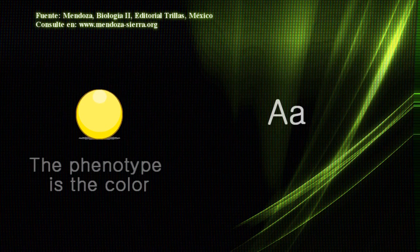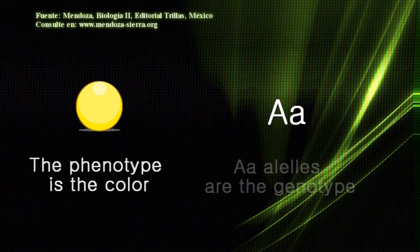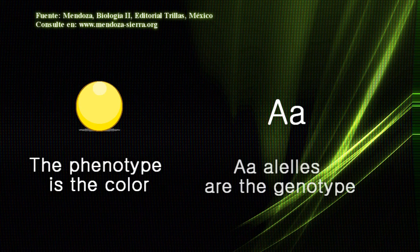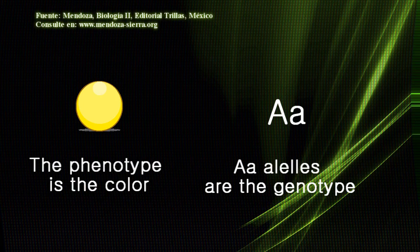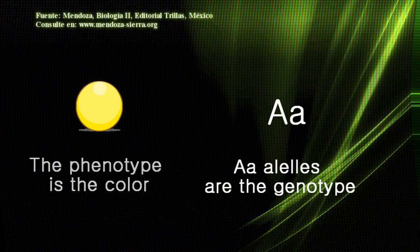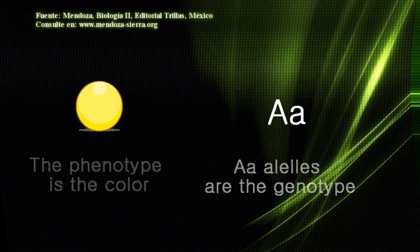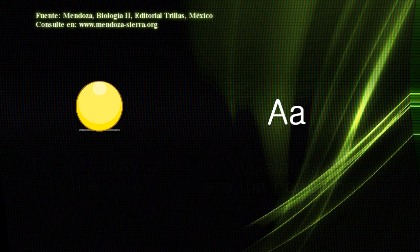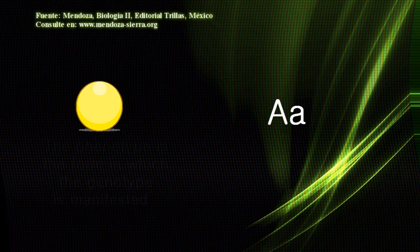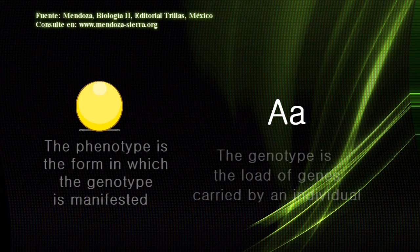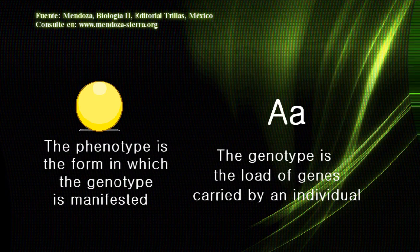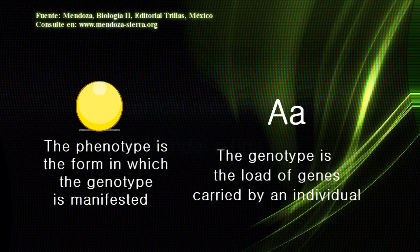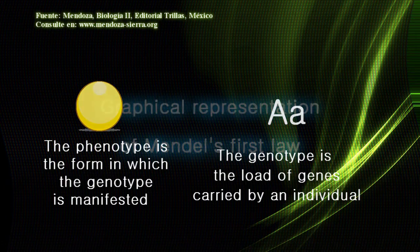The phenotype is an observable characteristic — in this case, the color of the pea seed. Meanwhile, the genotype refers to the type of genes of the individual. In summary, the phenotype is the form in which the genotype manifests, and the genotype is the load of genes carried by an individual.